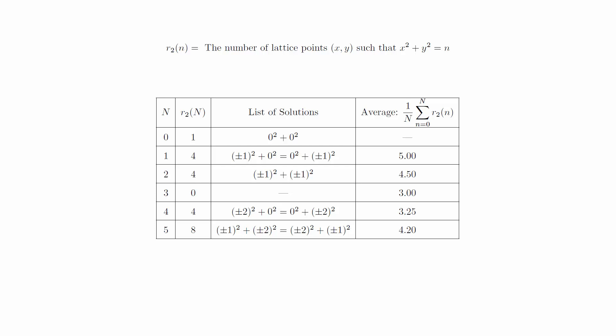The way we understand taking the average of an infinite list of values like this is actually to take the average for the first n values and then take the limit as n tends to infinity. This takes us to the statement of the theorem.